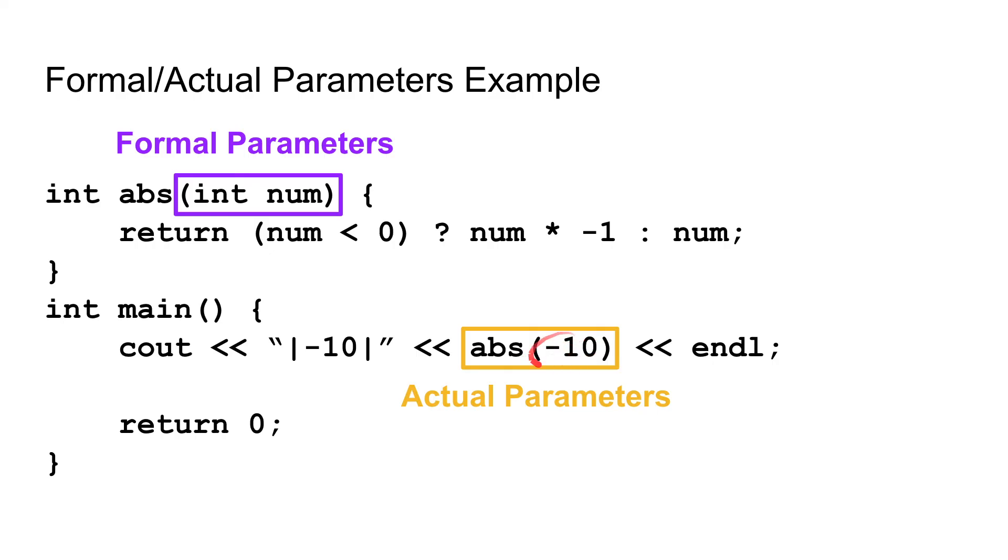Which would then take that neg10, copy it into this num variable, and then you are able to use that neg10. But by calling it num, at least in this case, here inside of the function.